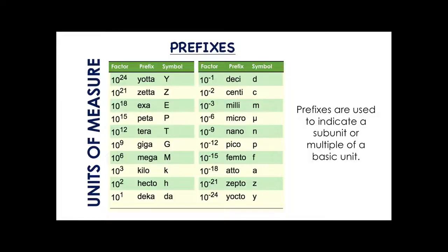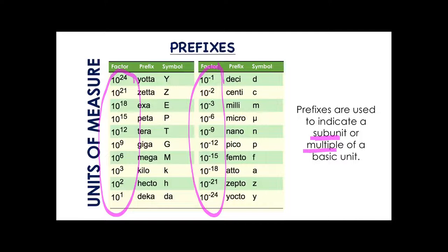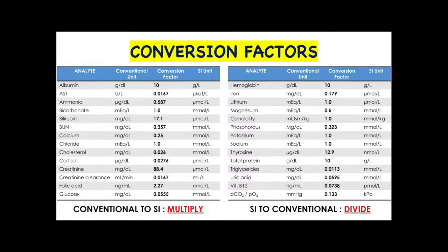We also have prefixes for the units of measure. Prefixes are used to indicate a subunit or multiple of a basic unit. For positive exponents, the values are multiplied — they denote a multiple of a base unit. If the exponents are negative, the values are divided and represent a lower value, denoting a subunit of a basic unit.